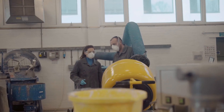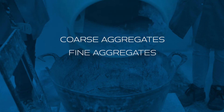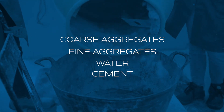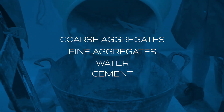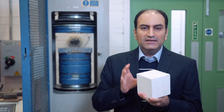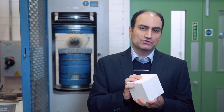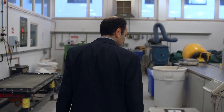We're going to use different ingredients with different proportions such as coarse aggregates, fine aggregates, water and of course cement. Once you've got this concrete we need to test it to see if we got the desired compressive strength or not.